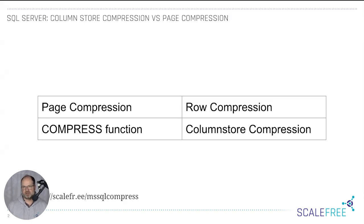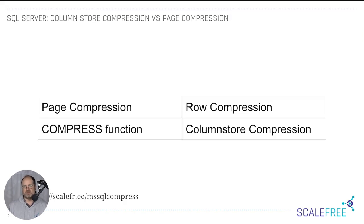We can go for page compression because that's essentially our pattern — we don't update, we don't delete, we just insert rows and select from data. Page compression is my default. In a SQL Server data warehouse, I always turn on page compression on all tables by default. It should be part of your generated pattern for your tables.